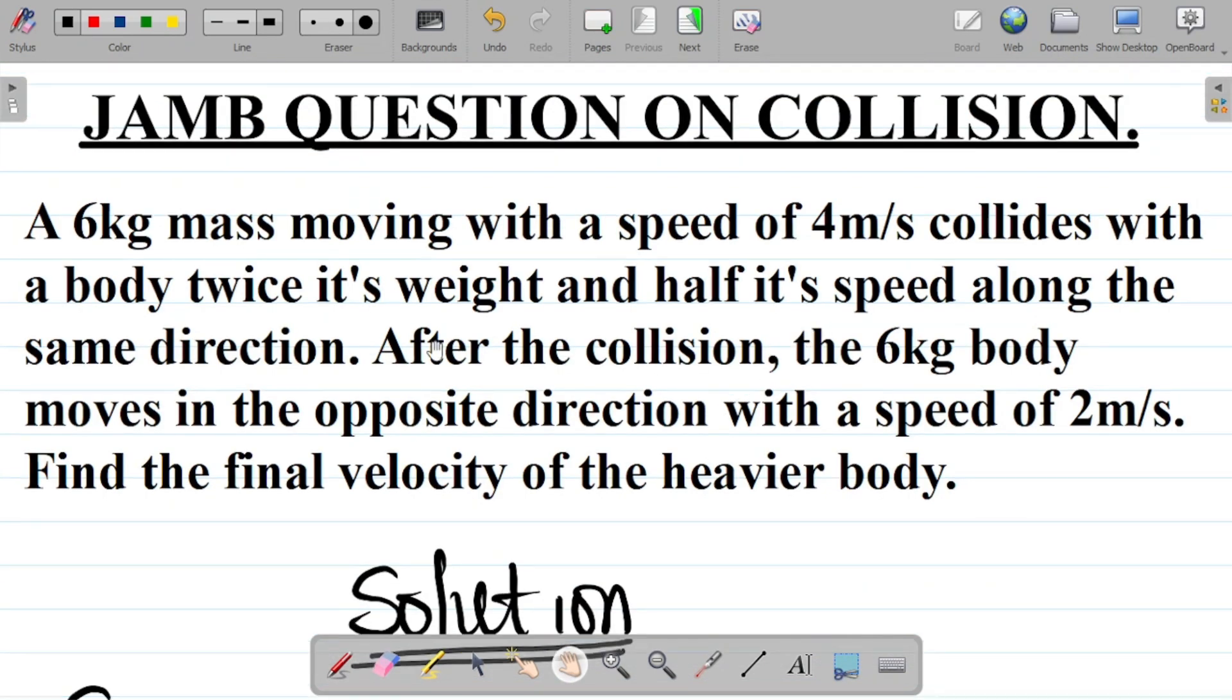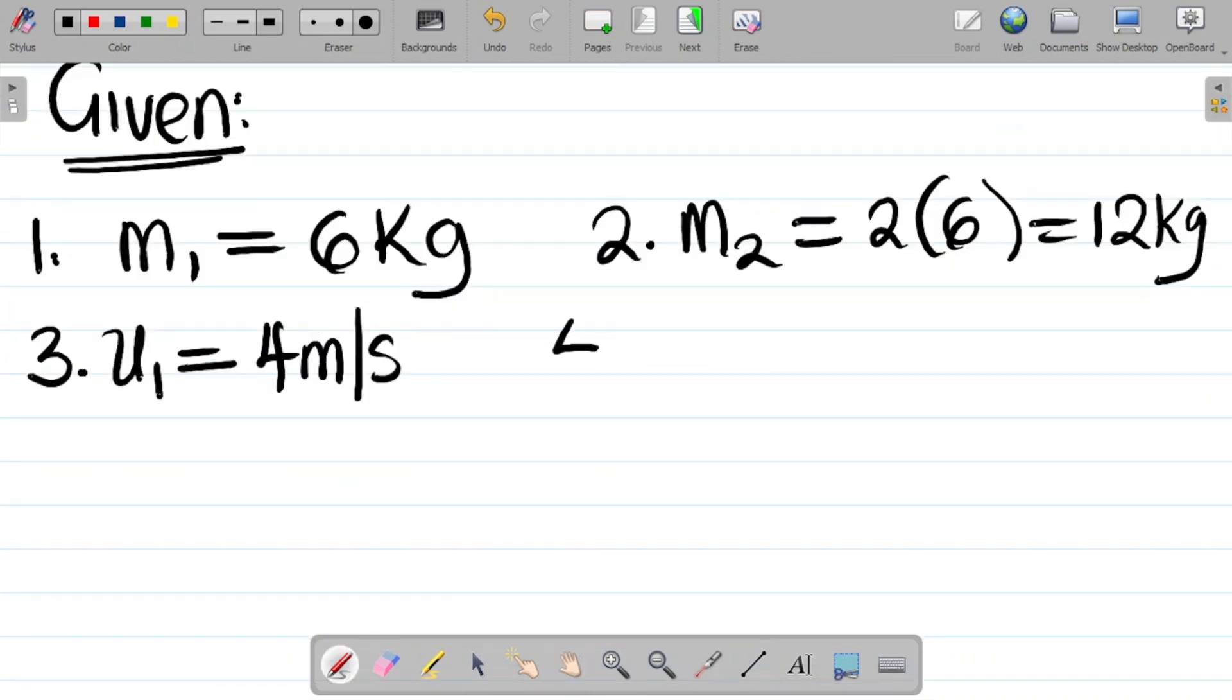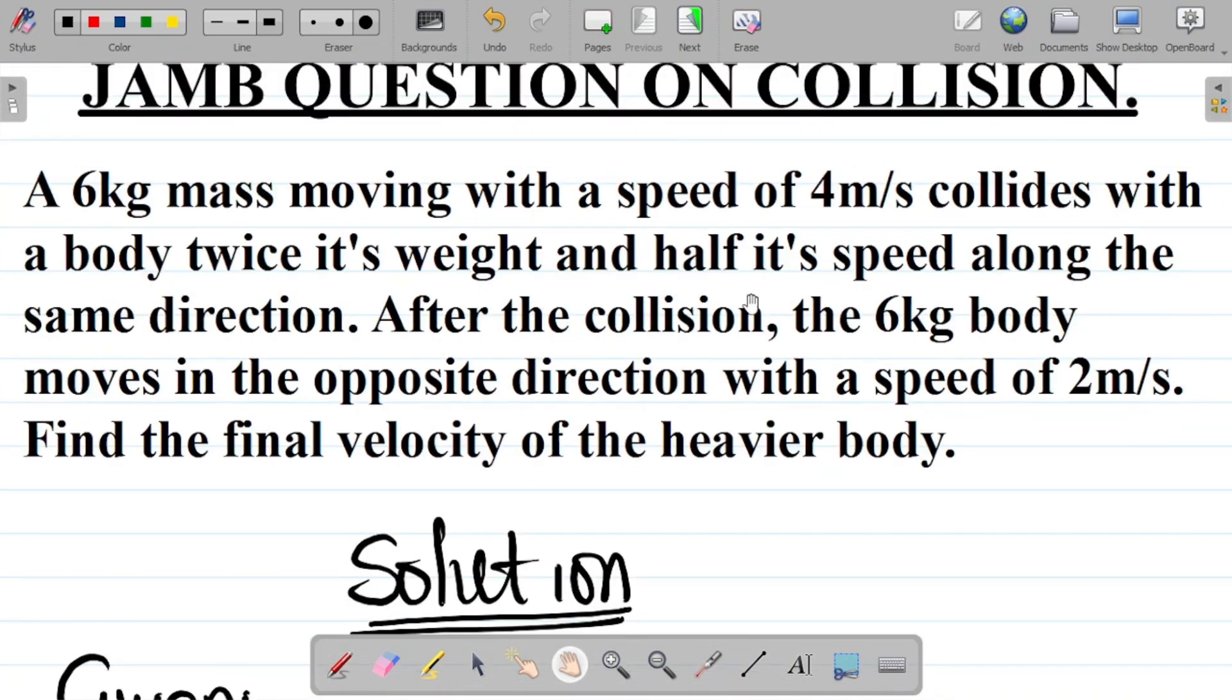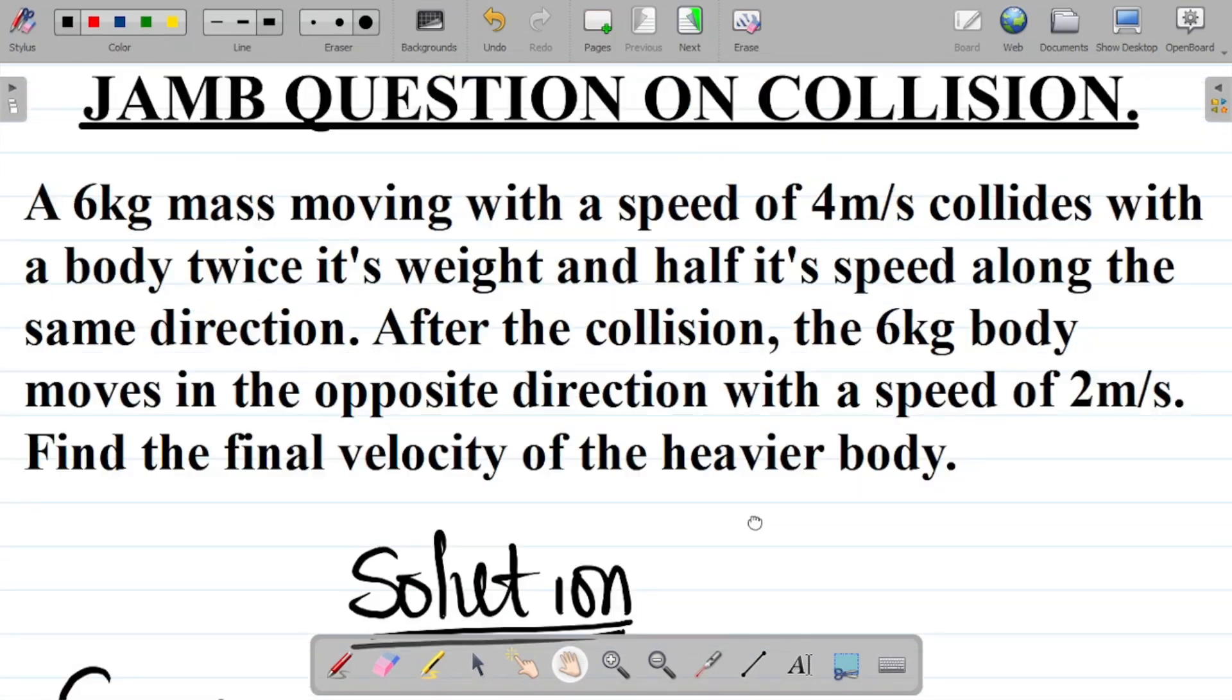They said collides with a body twice its weight, which we've gotten already as m2, and half its speed. That means number four, the initial velocity u of mass 2 equals half its speed. So u2 equals half of u1, and the value of u1 is 4, so half of 4 equals 2 m per second.